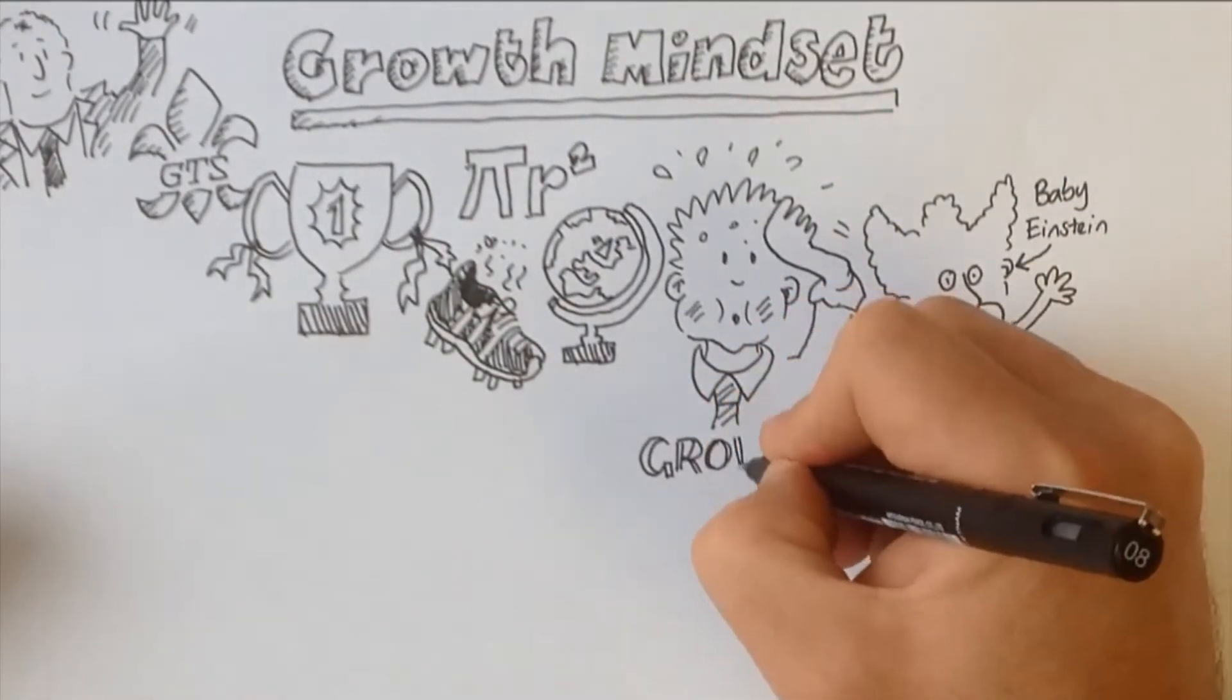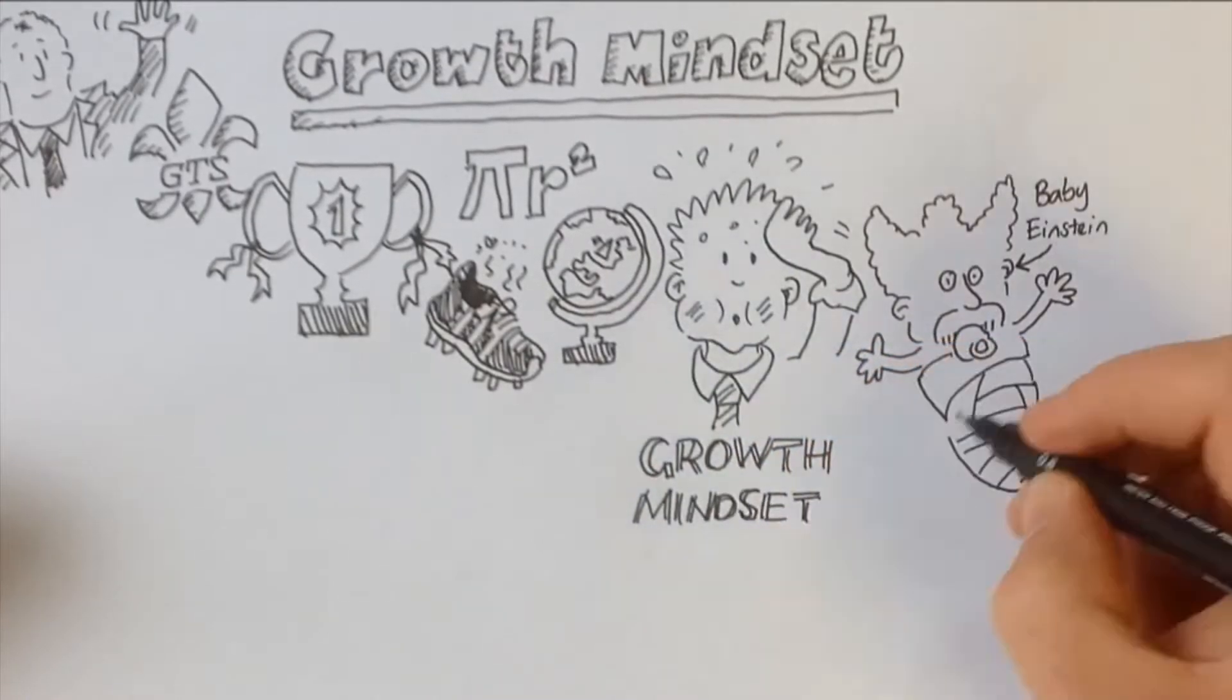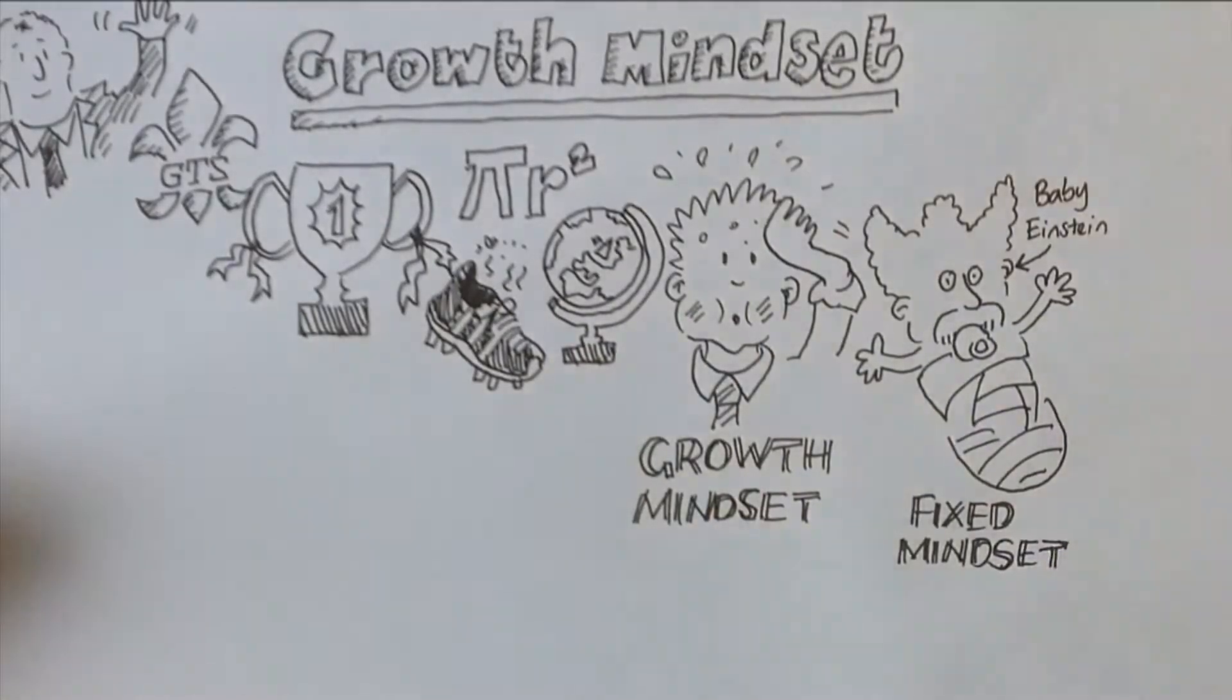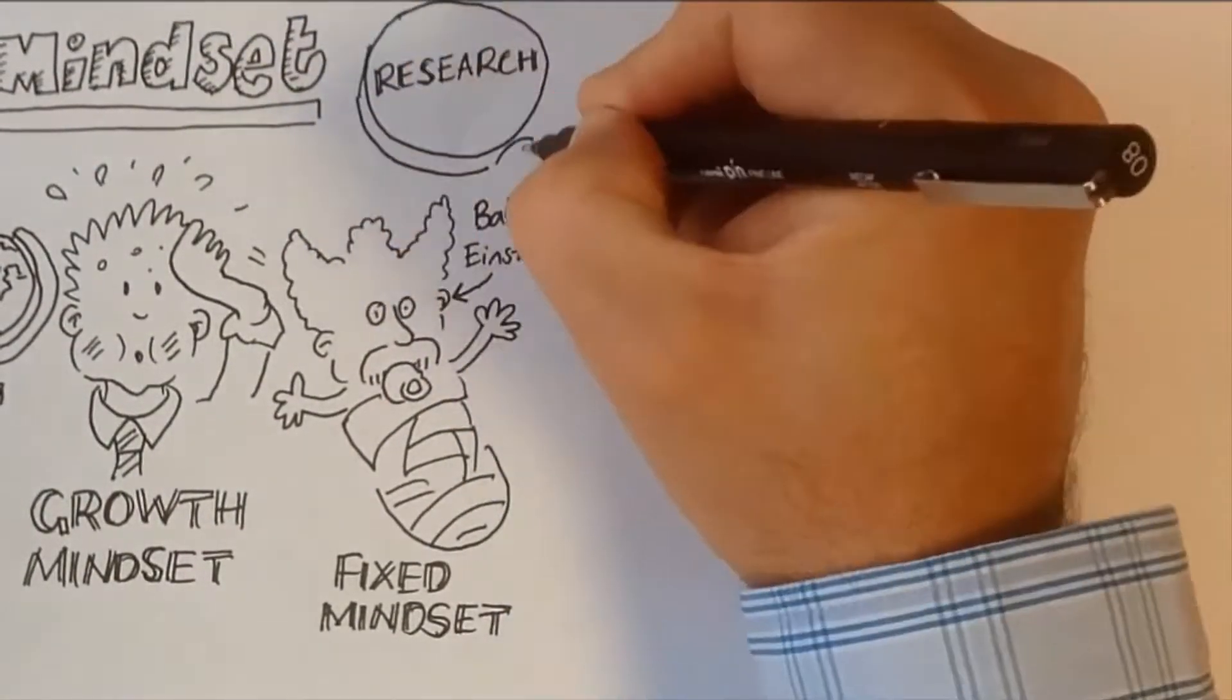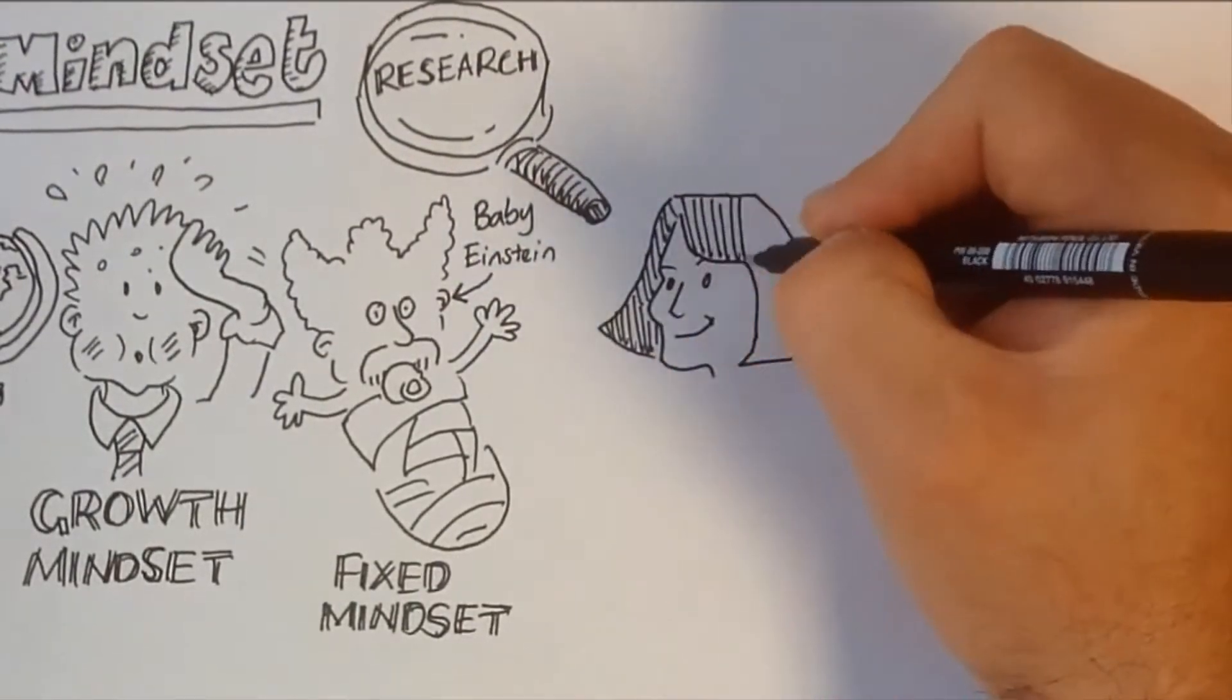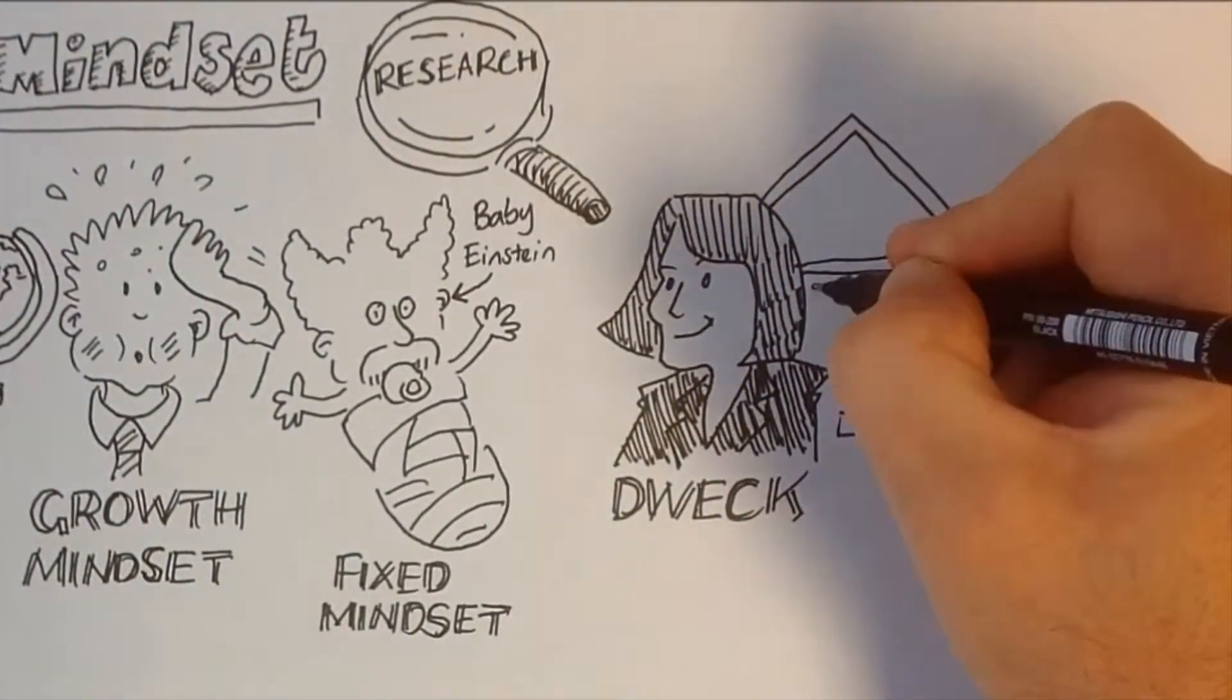This belief that intelligence comes through effort is called a growth mindset. The belief that intelligence is static and you're born with it is called a fixed mindset. Research completed by Carol Dweck at Stanford University in America has shown that people in all walks of life are more successful if they have a growth mindset.